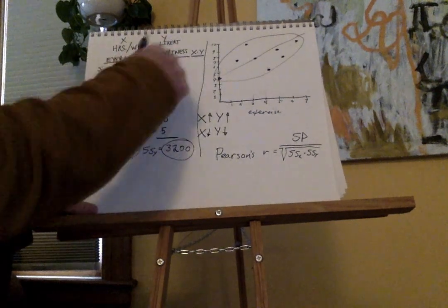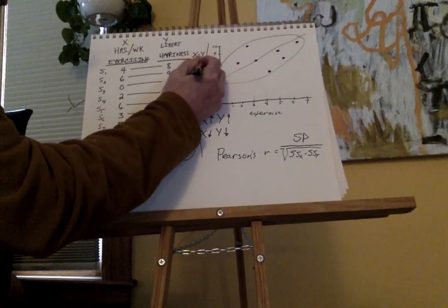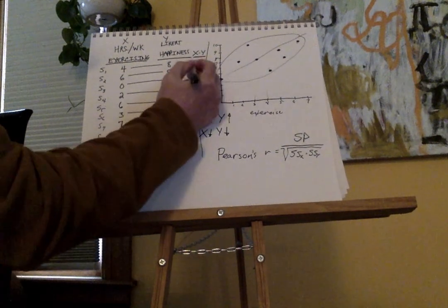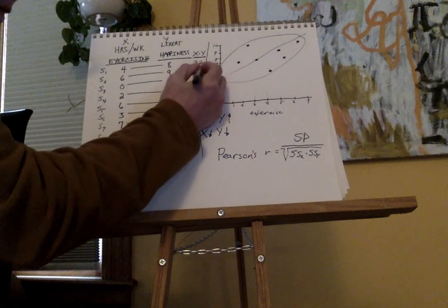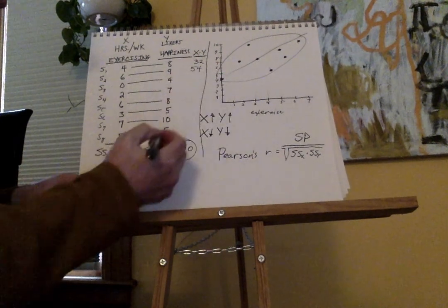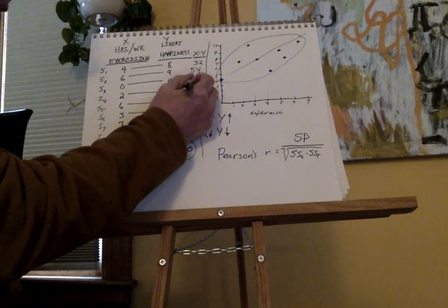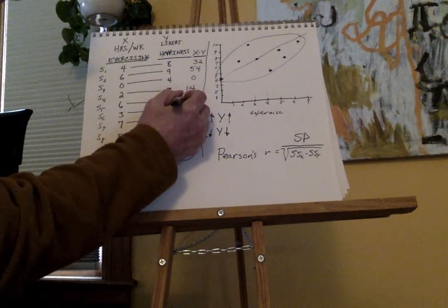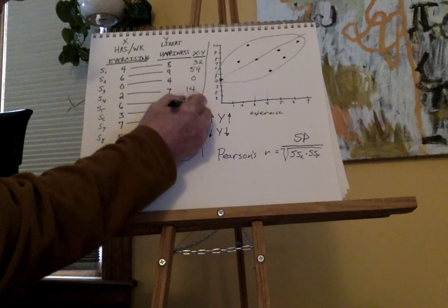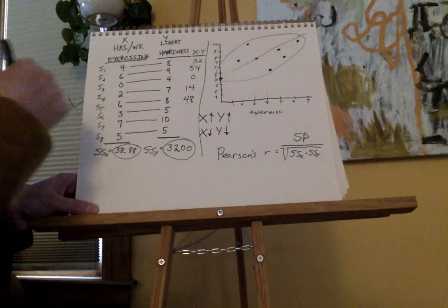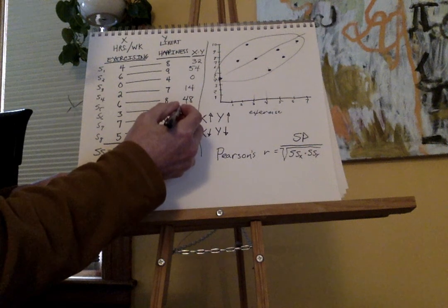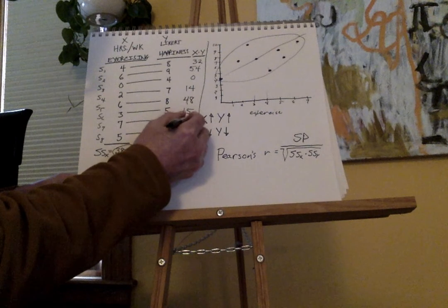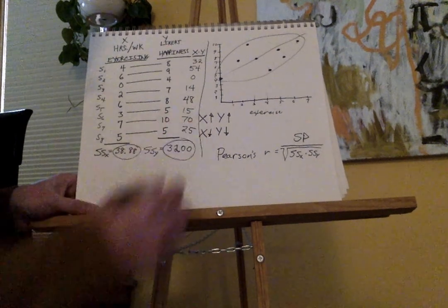Our x times y column: 4 times 8 is 32.00. 6 times 9 is 54.00. Then 0.00, 14.00, 48.00, 15.00, 70.00, and 25.00.